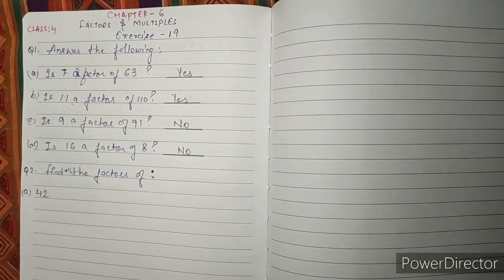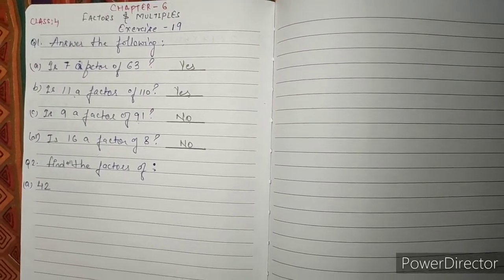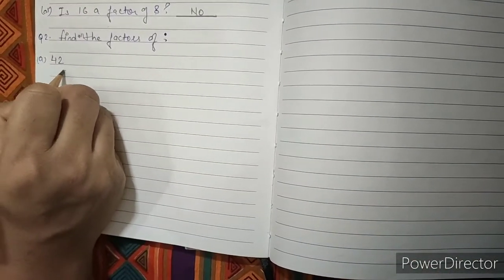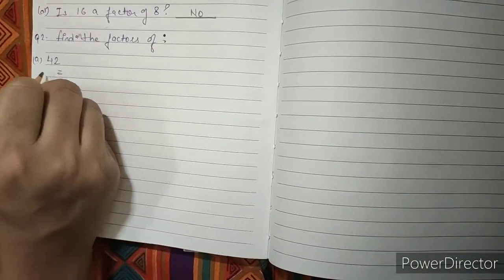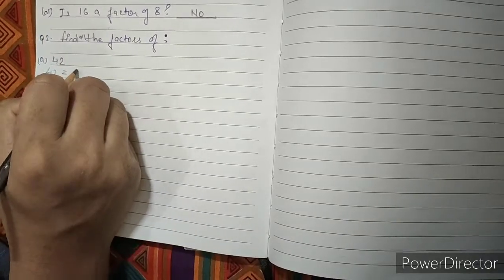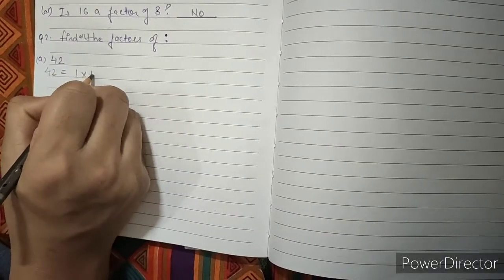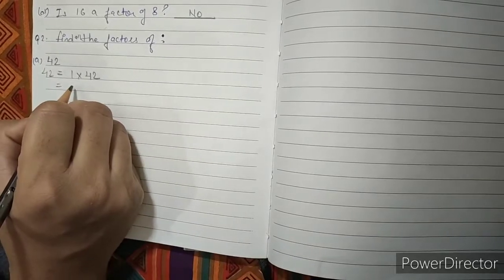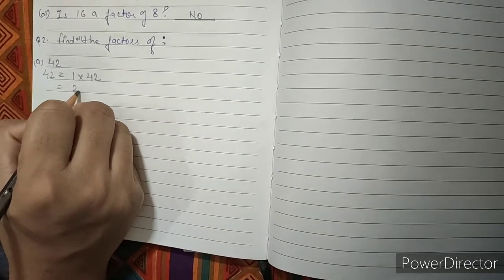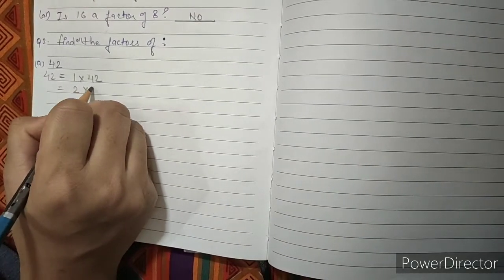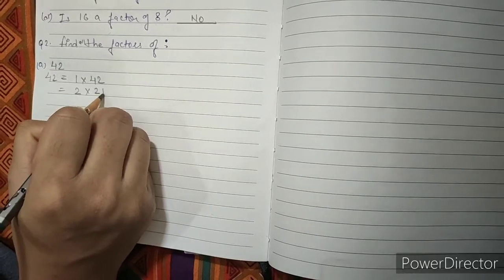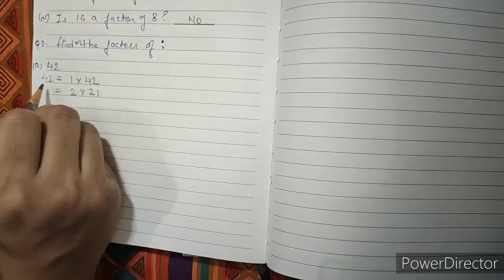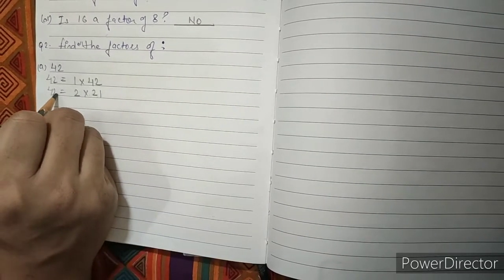Find all the factors of A: 42. First we write 42. 1 multiply by 42. In the next step, we write 2. 2 twos are 4, 2 ones are 2, so 2 multiply by 21 gives us 42.